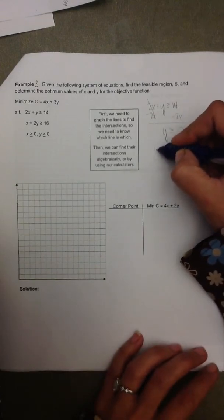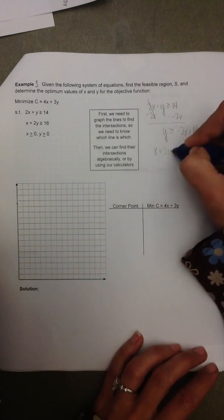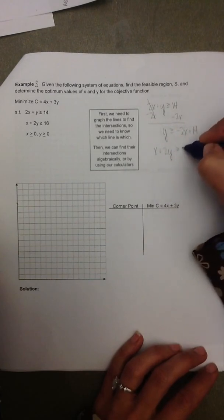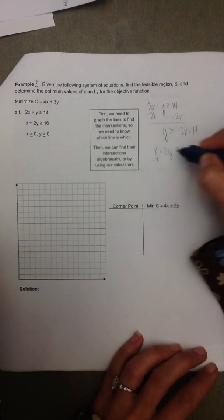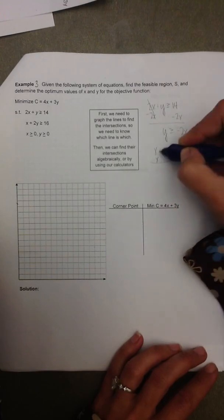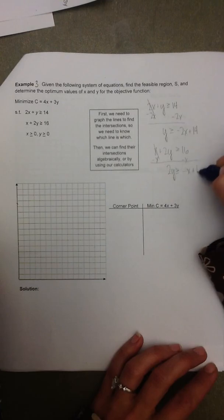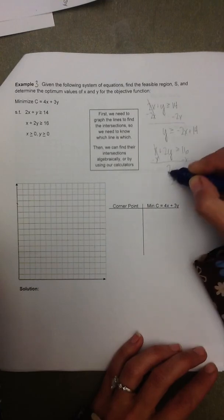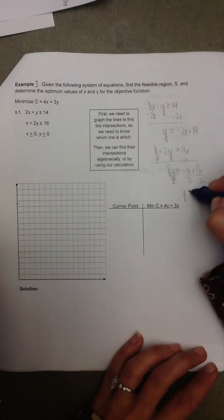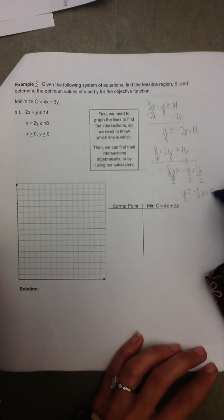The second inequality, x plus 2y is greater than or equal to 16. We have to subtract x from both sides and divide each piece by 2 to find that y is greater than or equal to negative 1 half x plus 8.